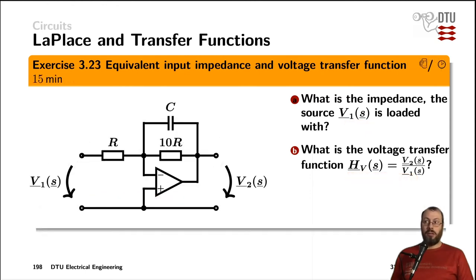Now the questions didn't change, still what impedance is the source seeing? And again, what voltage transfer function do we have? But a significantly different circuit here, now including an operational amplifier.